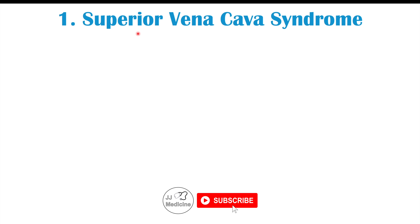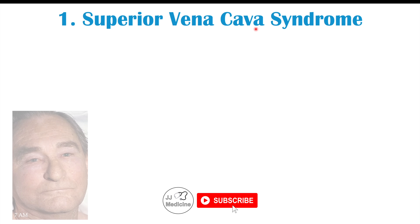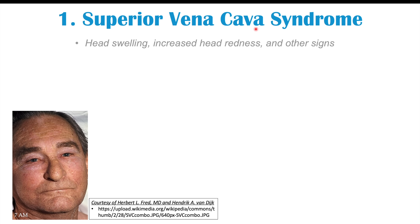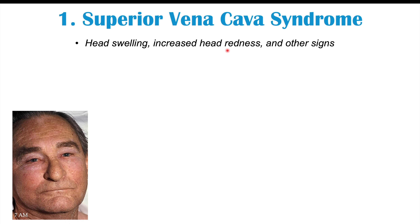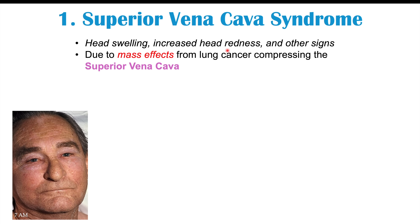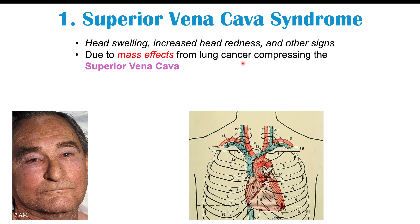The first finding we can see on the face is due to a condition known as superior vena cava syndrome, which involves head swelling, increased head redness, and other signs. It is due to mass effects from the lung cancer compressing the superior vena cava — the top vein that drains into the right atrium of the heart, where both the inferior and superior vena cava deposit blood.